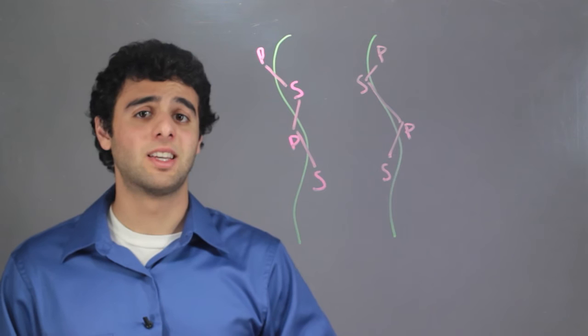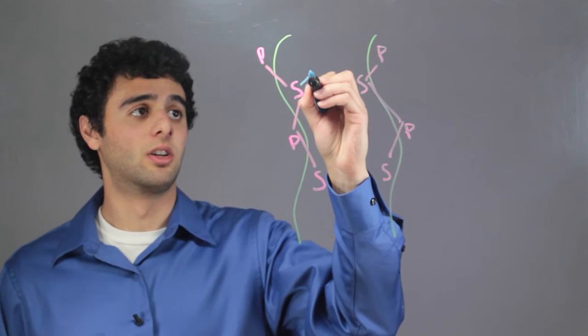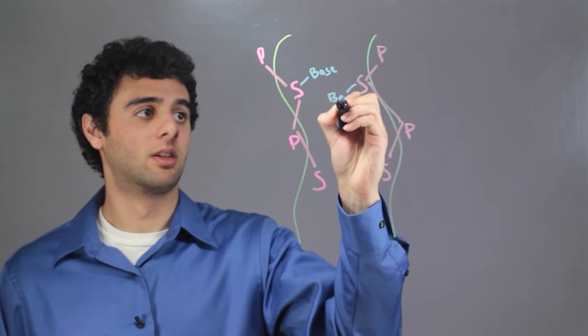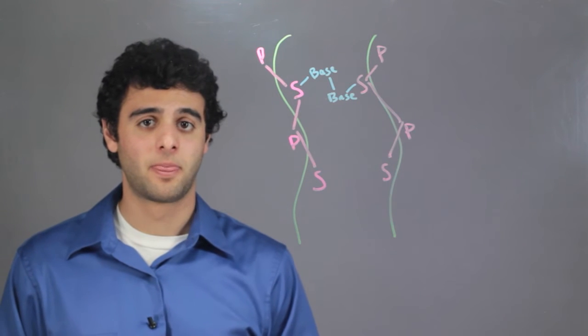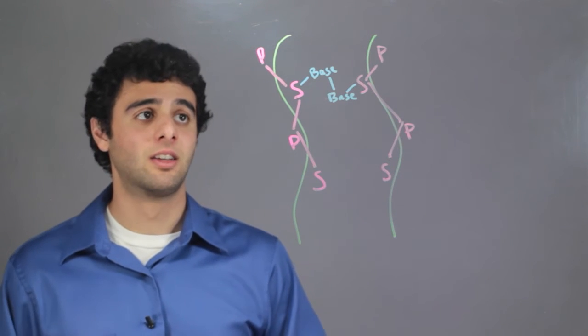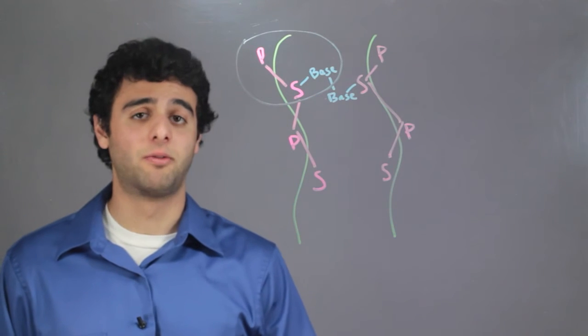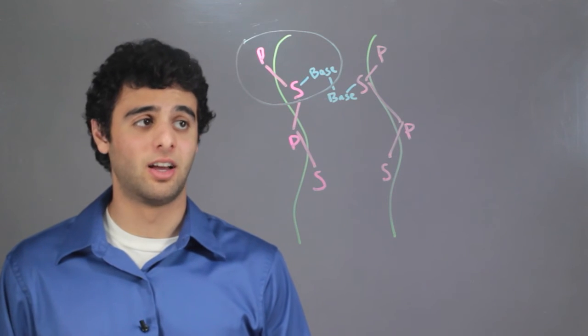However, this isn't everything that makes up a nucleotide. Each sugar is connected to a base, and these bases are attached to each other. So looking at this, this part right here containing a phosphate, a sugar, and a base is considered one nucleotide.